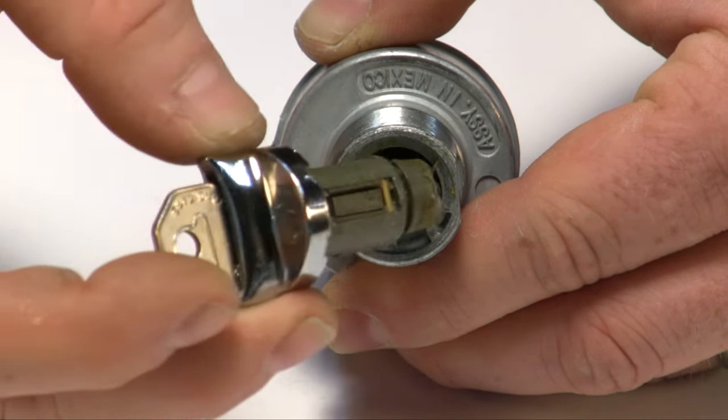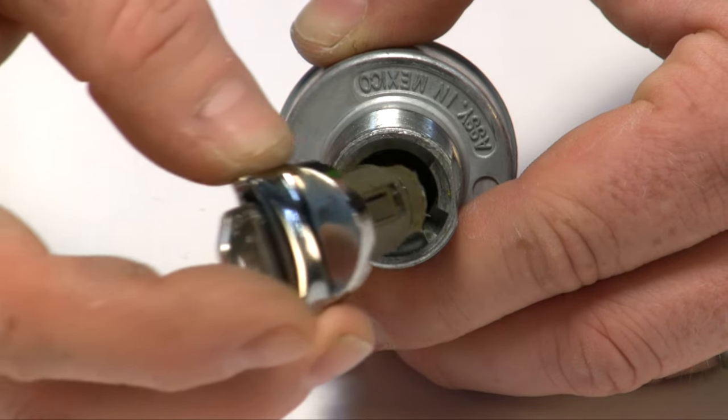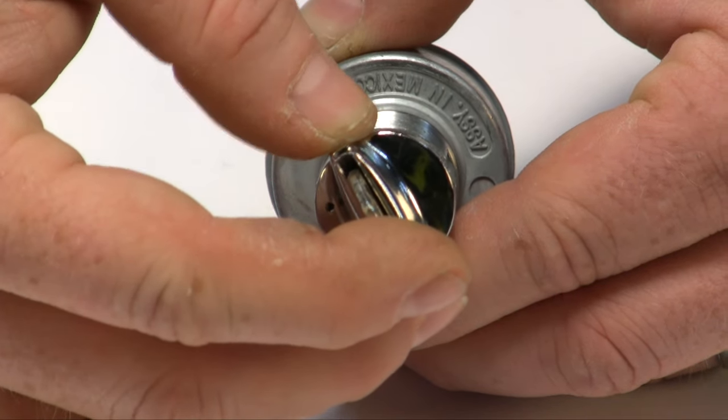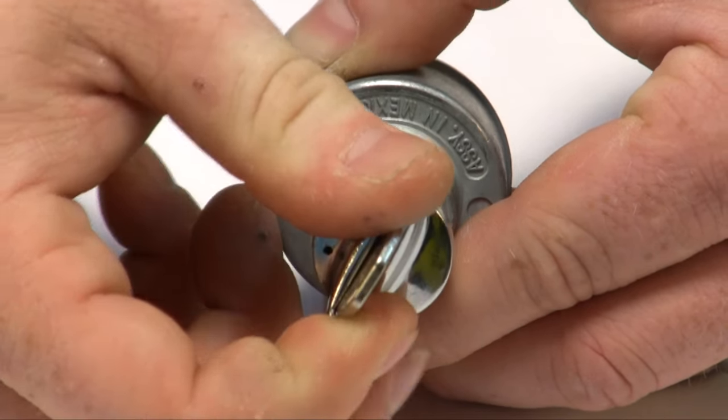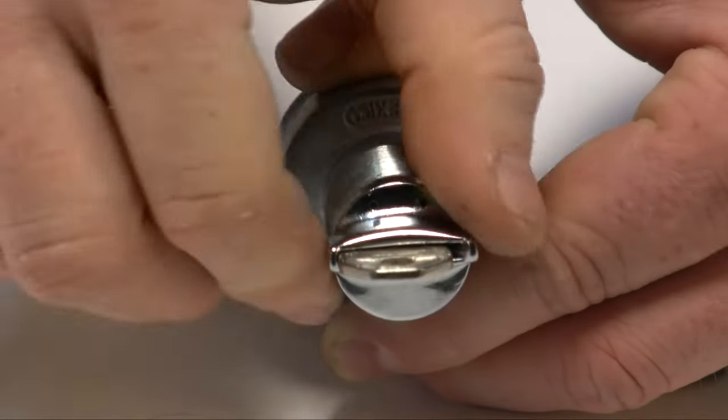Now to reinstall it, you're just going to reverse the process of removing it except you won't need the paper clip. You're going to push it straight in until it bottoms out and you're going to turn it right and now it's locked in.